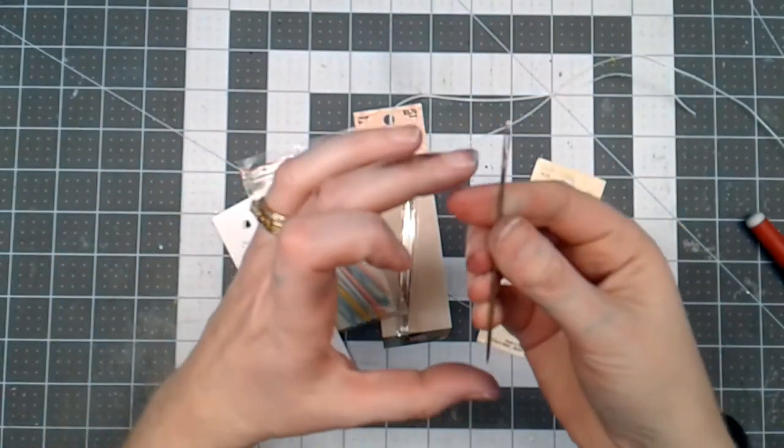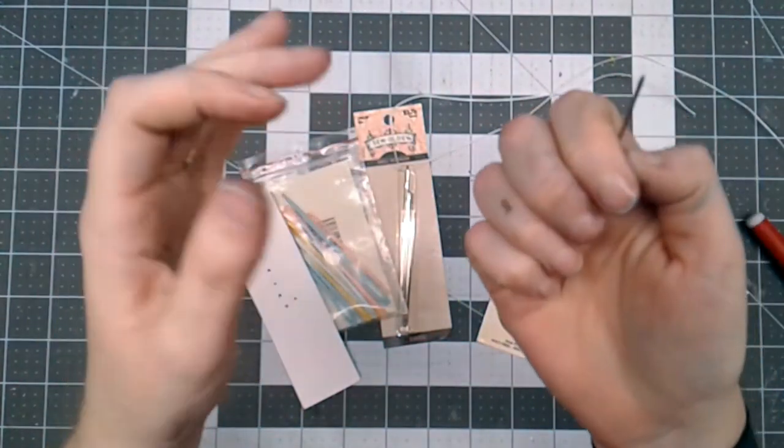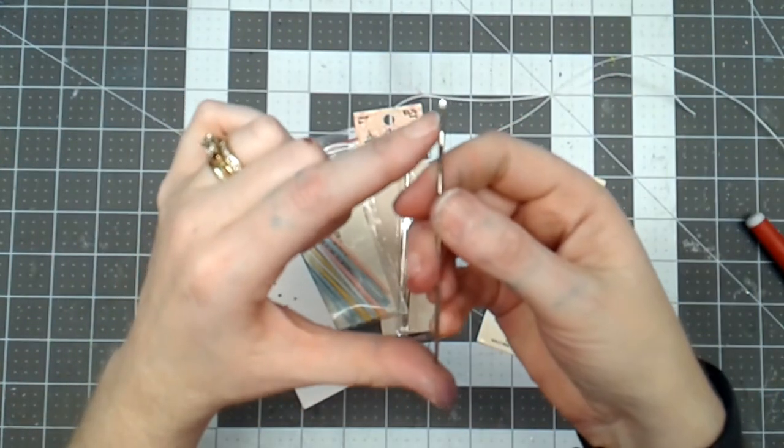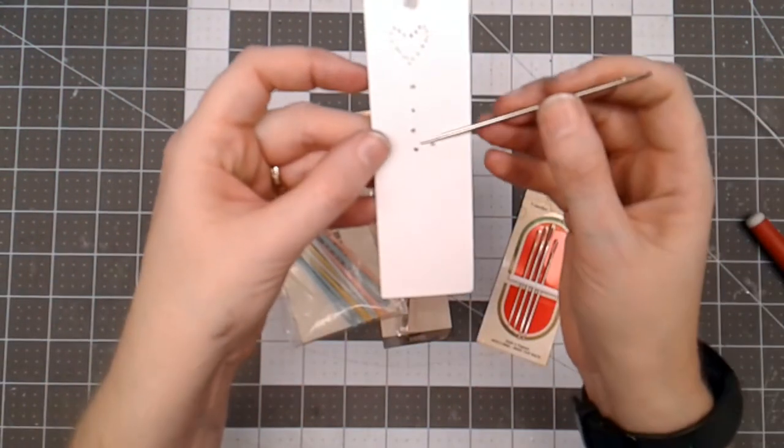And the other thing is they have a smaller hole in it. Excuse my fingers, I've been painting with glimmer mist. They have a smaller hole so that they'll go through the paper with ease.